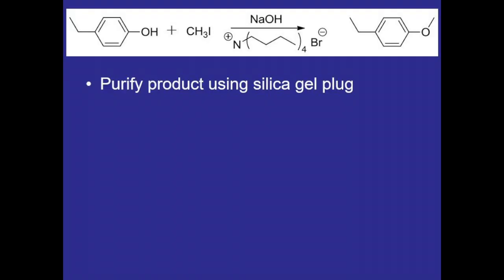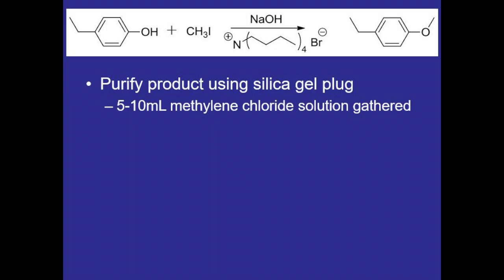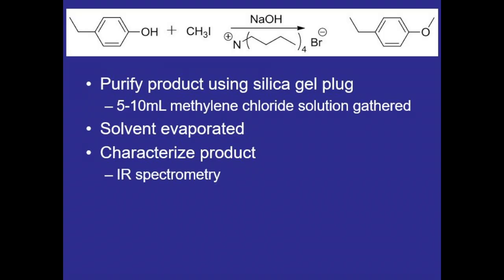The product can then be purified using a dry silica gel plug, which will look like this, and we'll use methylene chloride as the mobile phase to elute the product out, gathering about five to ten milliliters of that methylene chloride solution. Then the solvent can be evaporated, and the product characterized by running an IR spec and measuring the refractive index.